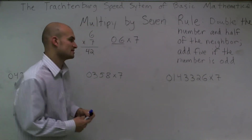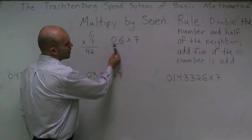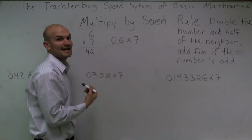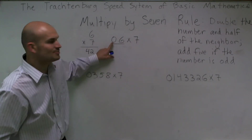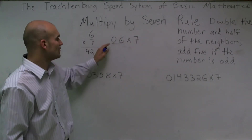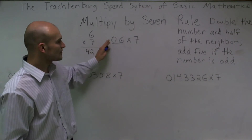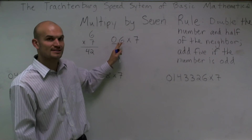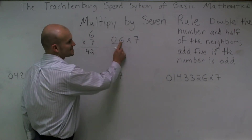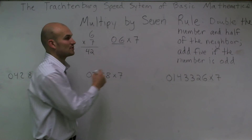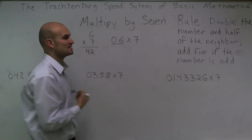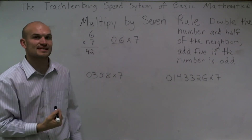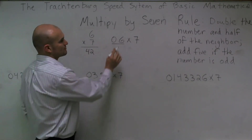When using the Trattenburg system, a couple of things we're going to do. We want to underline our number because we're going to put the answer directly below. We like to put a 0 in front, and that's going to allow us to represent numbers as neighbors. A neighbor is the number that's directly to the right of our number. So if I look at 6, there's no number directly to its right. However, by putting the 0 in front of the 6, I can now represent 6 as having a neighbor.